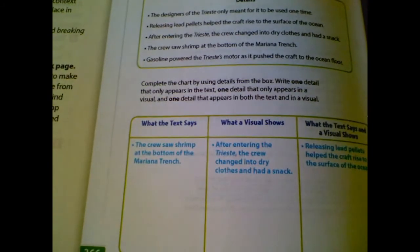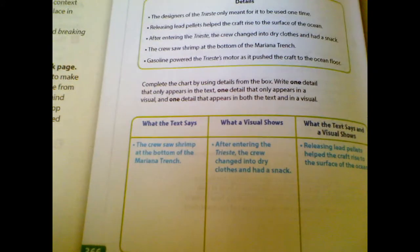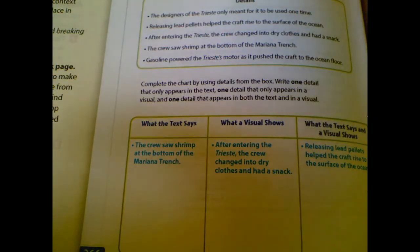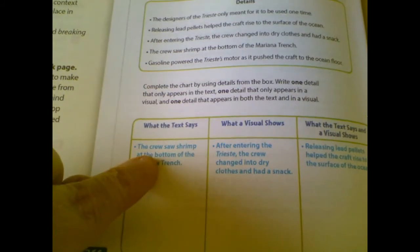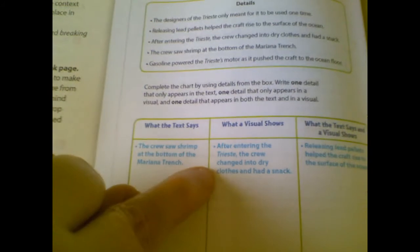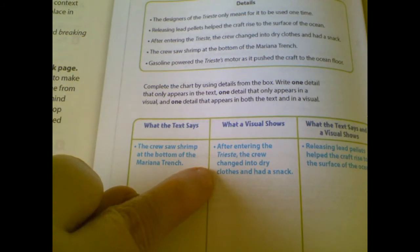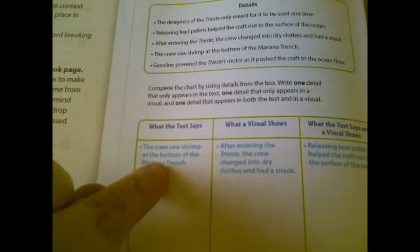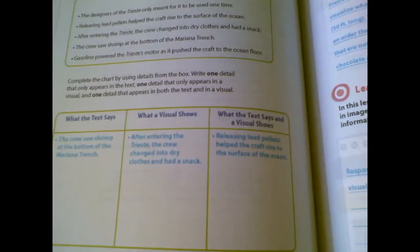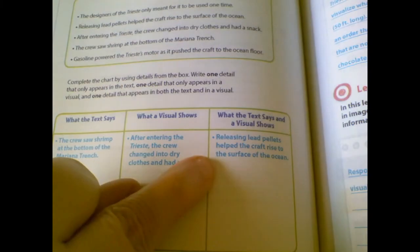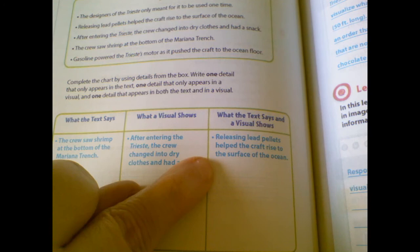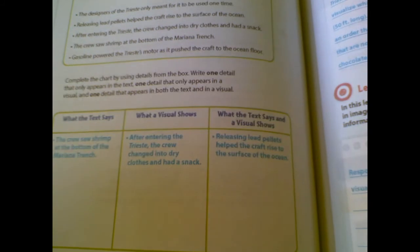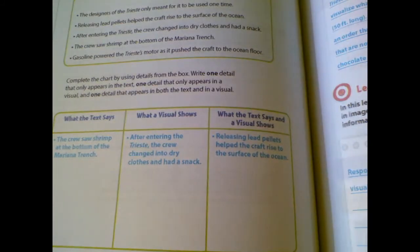In the text, the crew saw shrimp at the bottom of the Mariana Trench. So that was only found in the text. The visual: after entering the Trieste, the crew changed into dry clothes and had a snack. That's only shown in the visual, it's not shown in the text, just in the visual. But one that they both have in common, that's found in both, releasing lead pellets helped the craft rise to the surface of the ocean. So that was found in both the text and one of the visuals.